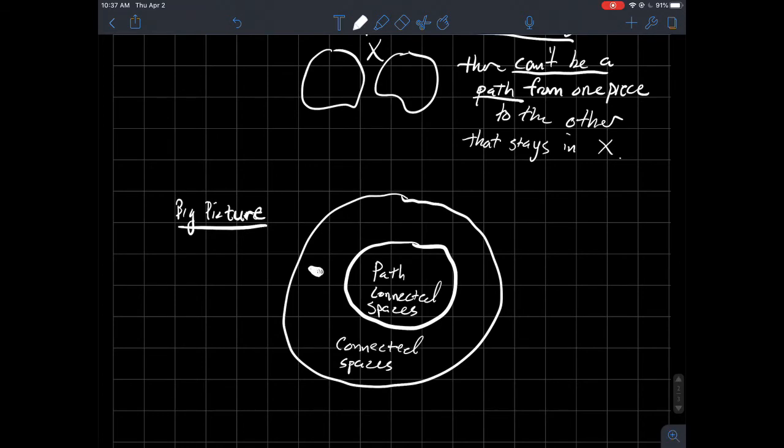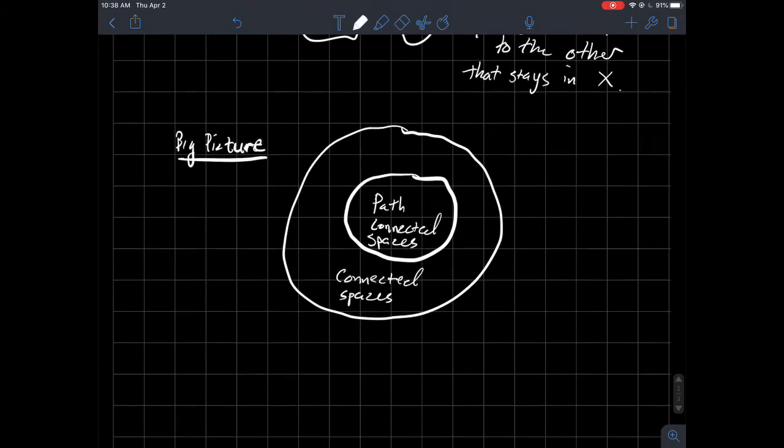And a good example of that would be the topologist sine curve. So that's something that you could read about, where you go into a lot more detail about why the topologist sine curve is connected but not path-connected. This is one of the things that people study. Can I think of a space that has this property but not this property and all that good stuff to stretch the limitations of some of this theory.